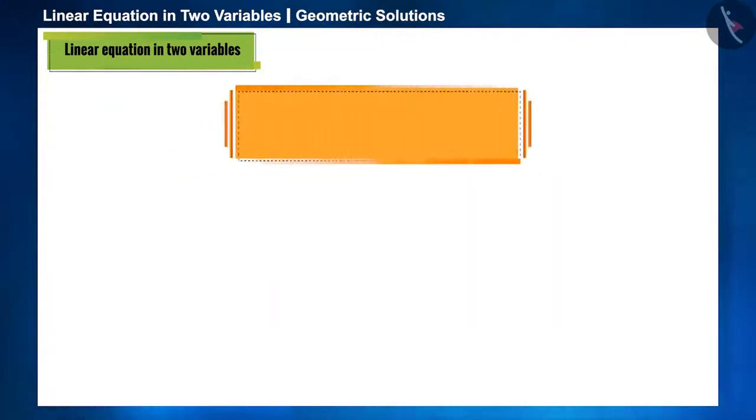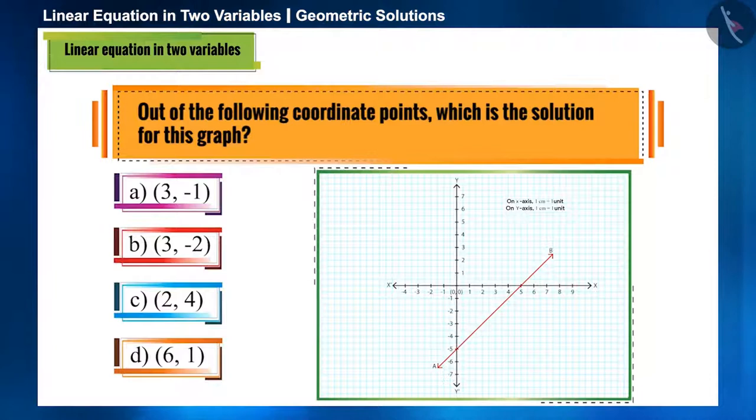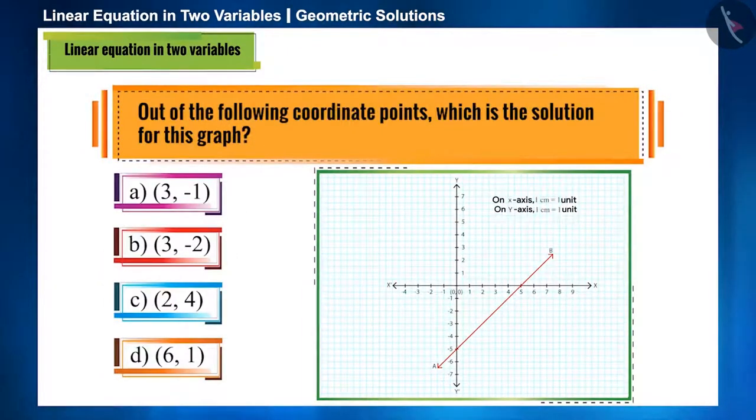Let's look at the first question: out of the following coordinate points, which is the solution for this graph? Friends, here only line AB is given, but its equation is not given in which to substitute this coordinate point and check whether it is a solution or not. So what should we do now? You can think of an answer by pausing this video.